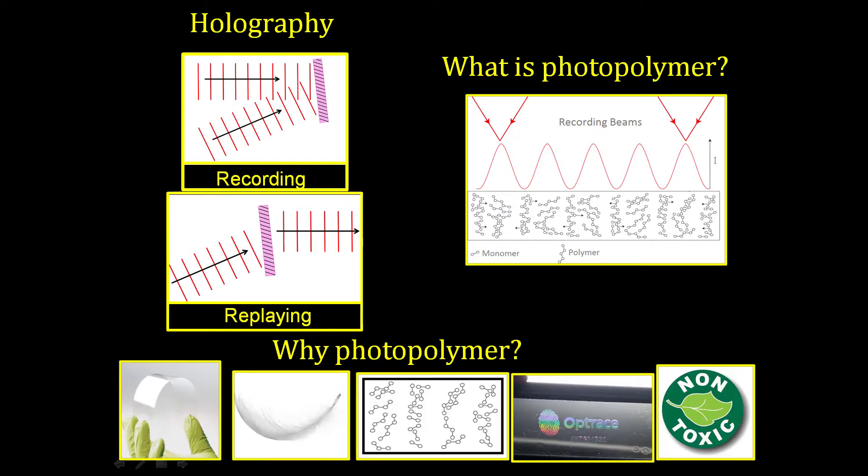So why photopolymer? It's thinned down into tens of microns and flexible, it's lightweight, it is a volume material which means it can be a hundred percent efficient and doesn't really get affected by contaminants, it's mass producible as shown by our spin-out company, and it's non-toxic.